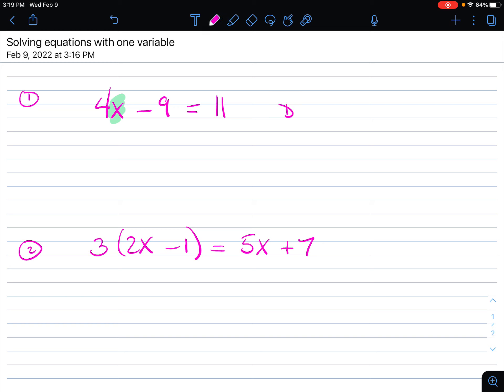So this is when we looked at our do and undo steps. So we say, what was done to x first? And I can see that there was a multiplication of 4. What was done to x second was subtracted 9.